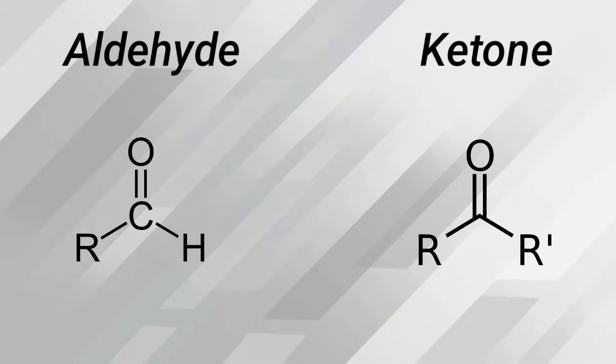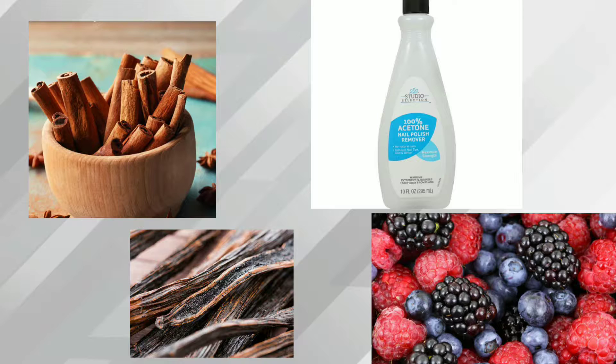Aldehydes and ketones are organic compounds with the C double bond O carbonyl functional group. When one of the bonds with the carbonyl carbon is hydrogen, it is an aldehyde. When both the bonds with the carbonyl carbon are R groups, that is a ketone. The R group can be aliphatic or aromatic.